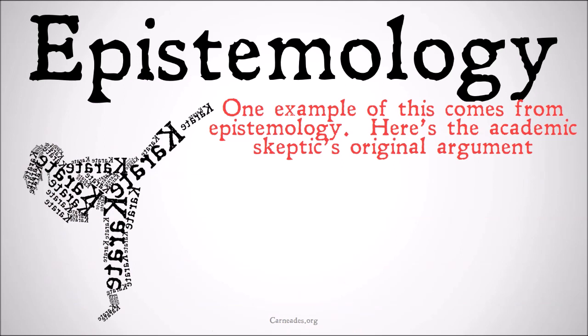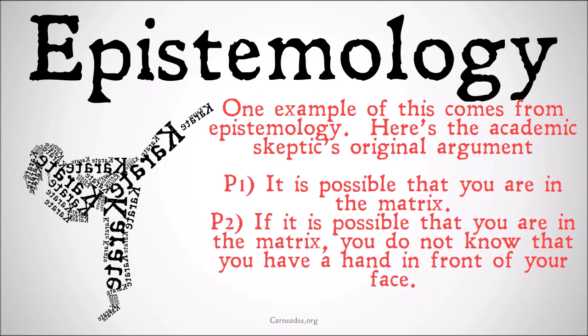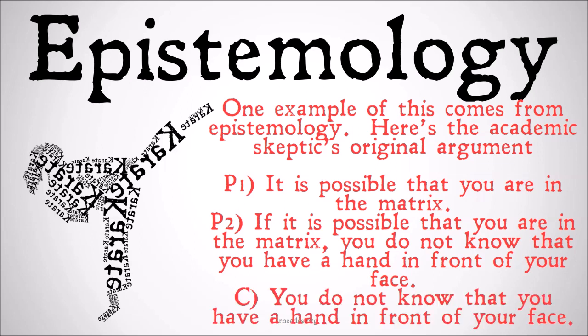One example of this comes from epistemology. Here's the academic skeptic's original argument. Premise one: it's possible that you're in the matrix. Premise two: if it's possible that you're in the matrix, you do not know that you have a hand in front of your face, because that hand could be by your side, or you could just be a brain in a vat. Therefore, you do not know that you have a hand in front of your face.